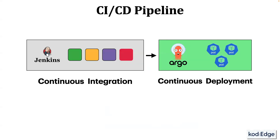In our CI/CD setup, you can call the Jenkins pipeline the continuous integration part and the ArgoCD setup the continuous deployment part. Typically, deploy to dev should be part of continuous deployment, but as we are using Docker, I kept it on the Jenkins side. If you are using Kubernetes for the deploy to dev stage as well, then you can handle the entire deployment process using ArgoCD.